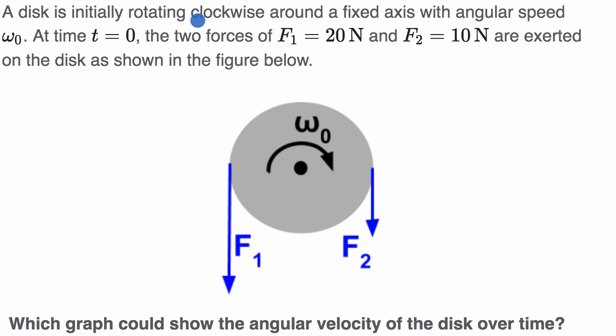A disk is initially rotating clockwise around a fixed axis with angular speed ω₀. At time t equals zero, the two forces of F₁ equals 20 newtons and F₂ equals 10 newtons are exerted on the disk as shown in the figure below. So these are the magnitudes, but here they show the magnitude and the direction. They say which graph could show the angular velocity of the disk over time.